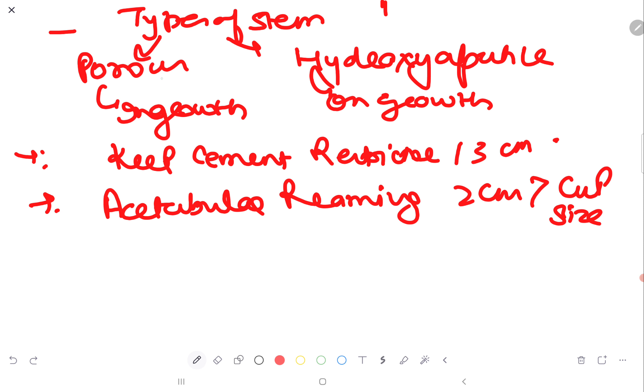There are two types of stems, porous and hydroxyapatite. If you are using hydroxyapatite covering, on-growth occurs and in the porous stems, in-growth occurs. Keep cement restrictor at 13 cm. Acetabular reaming 2 cm more than the cup size is done.